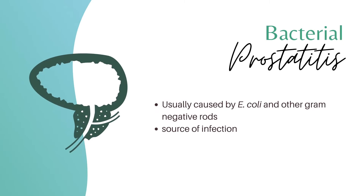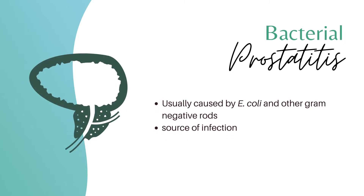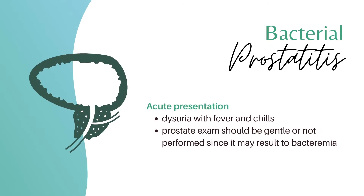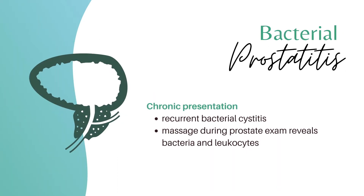Bacterial prostatitis is the infection of the prostate gland, commonly caused by E. coli and other gram-negative rods. It has two presentations. Acute presentation has dysuria with fever and chills; when doing a prostate examination, it is important to be gentle so as not to trigger the spread of infection. Chronic presentation is recurrent bacterial cystitis, and the prostate fluid shows bacteria and leukocytes.